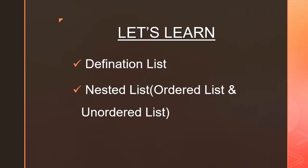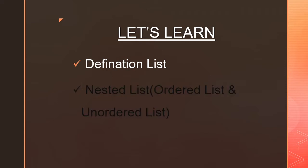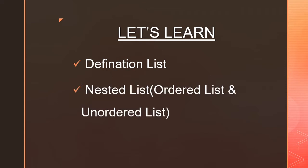In this video, we will learn Definition List and Nested List. Nested List is a combination of Ordered List and Unordered List. We can place Ordered List within Unordered List, or Unordered List within Ordered List — we can place both Ordered List and Unordered List within each other.